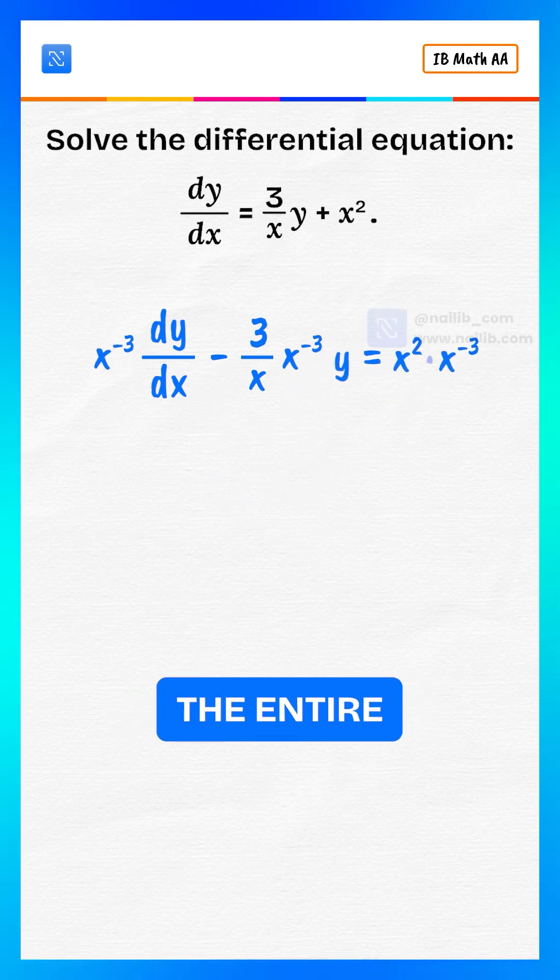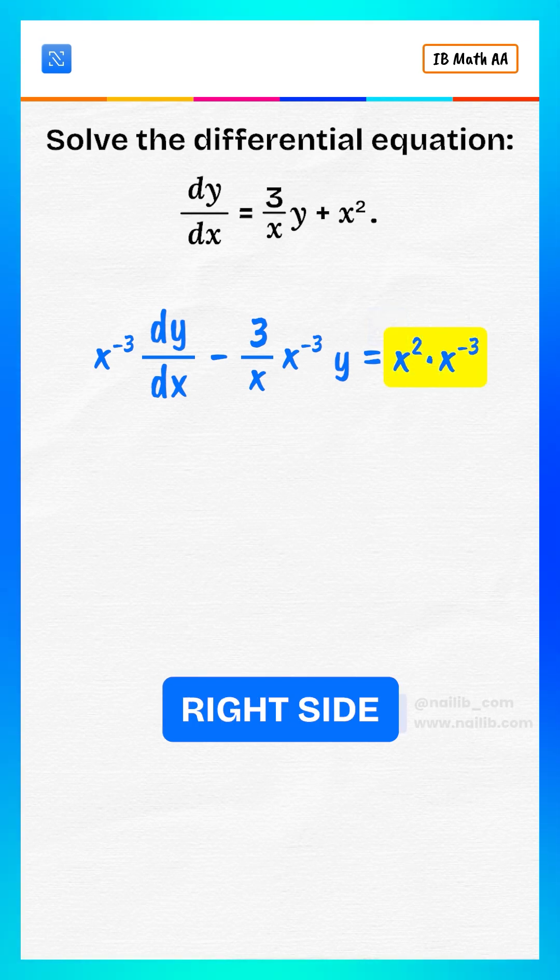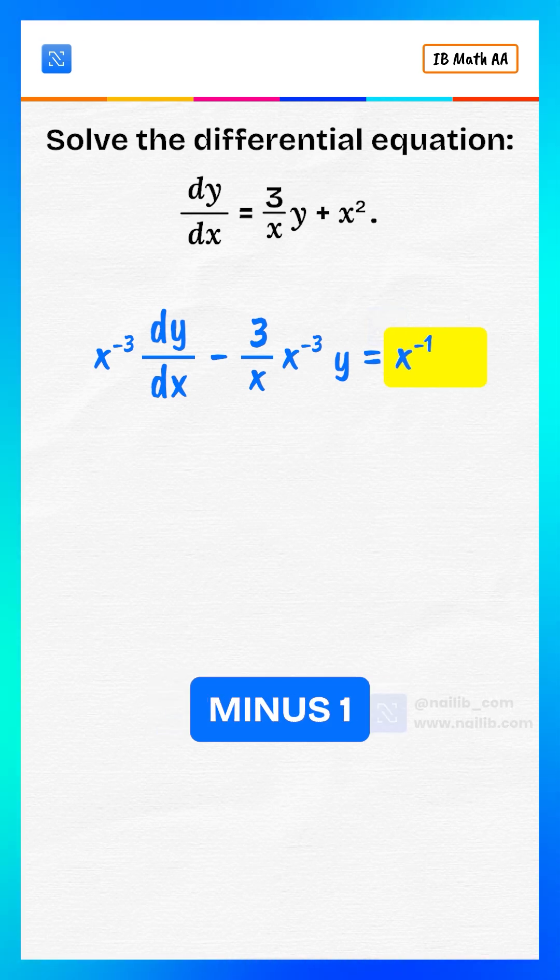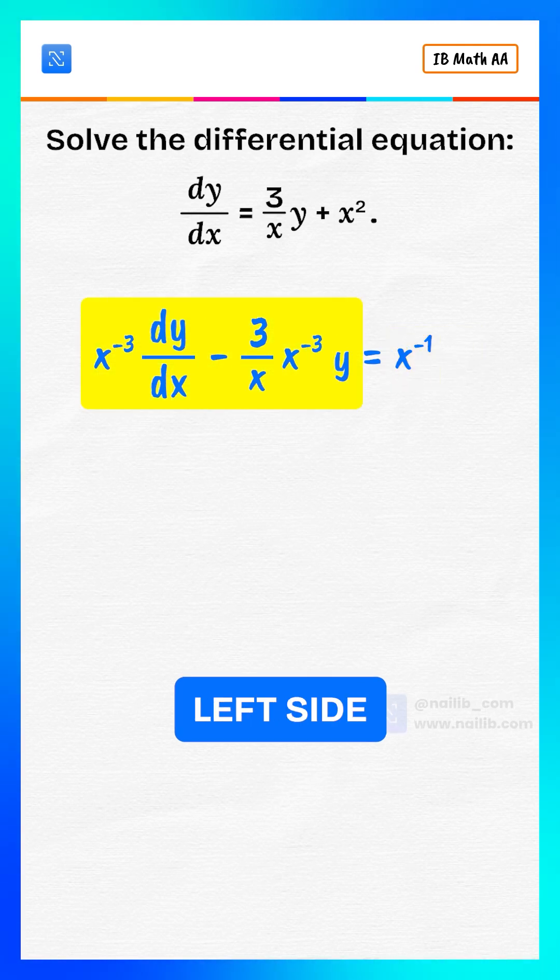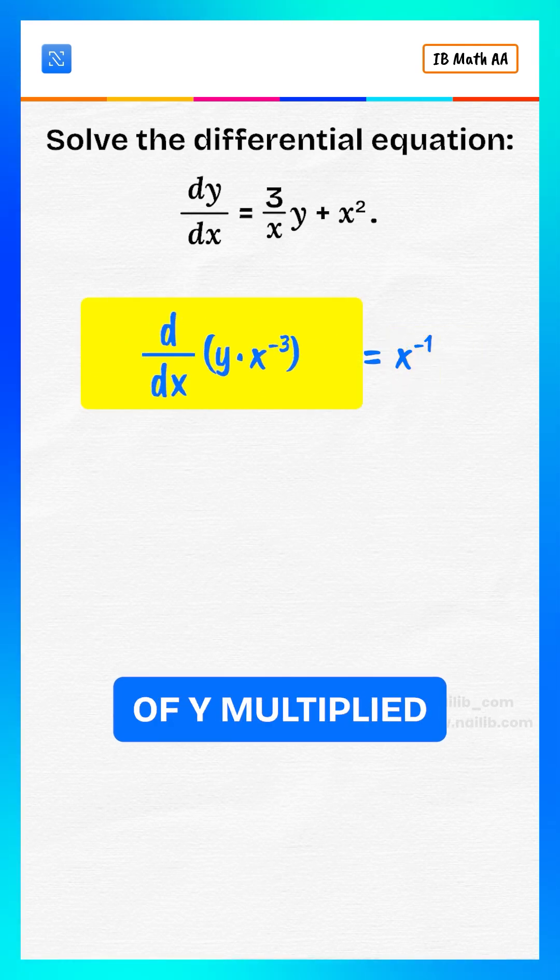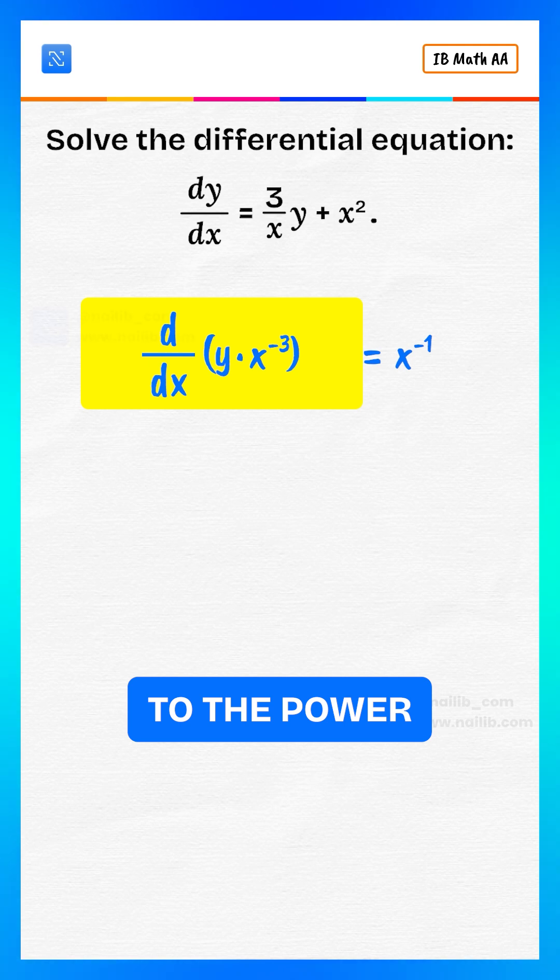Multiply the entire equation by the integrating factor. So the right side becomes x^(-1), and the left side becomes the derivative of y multiplied by x^(-3).